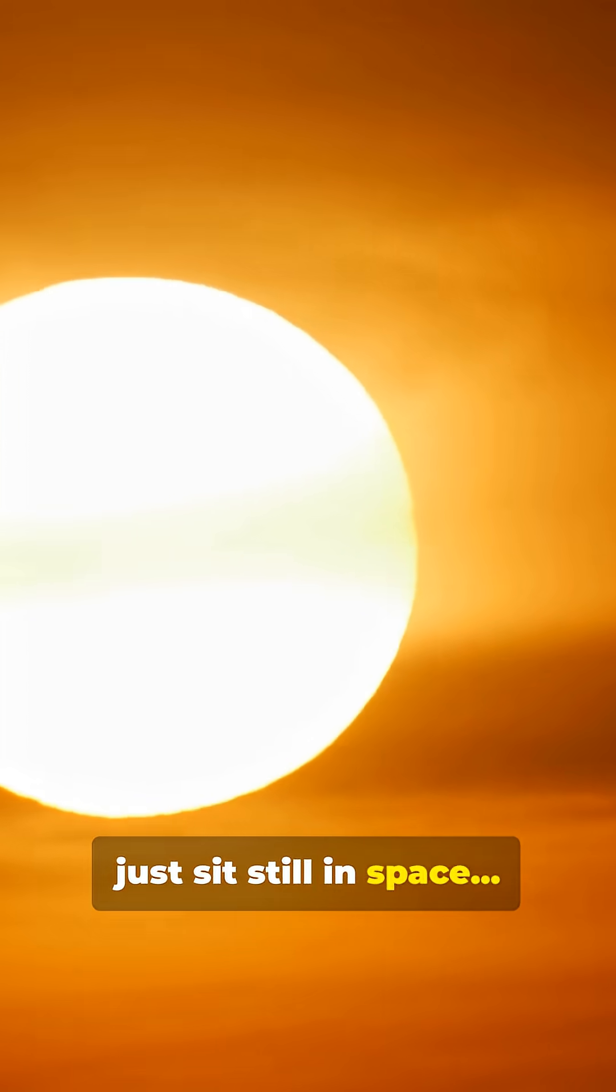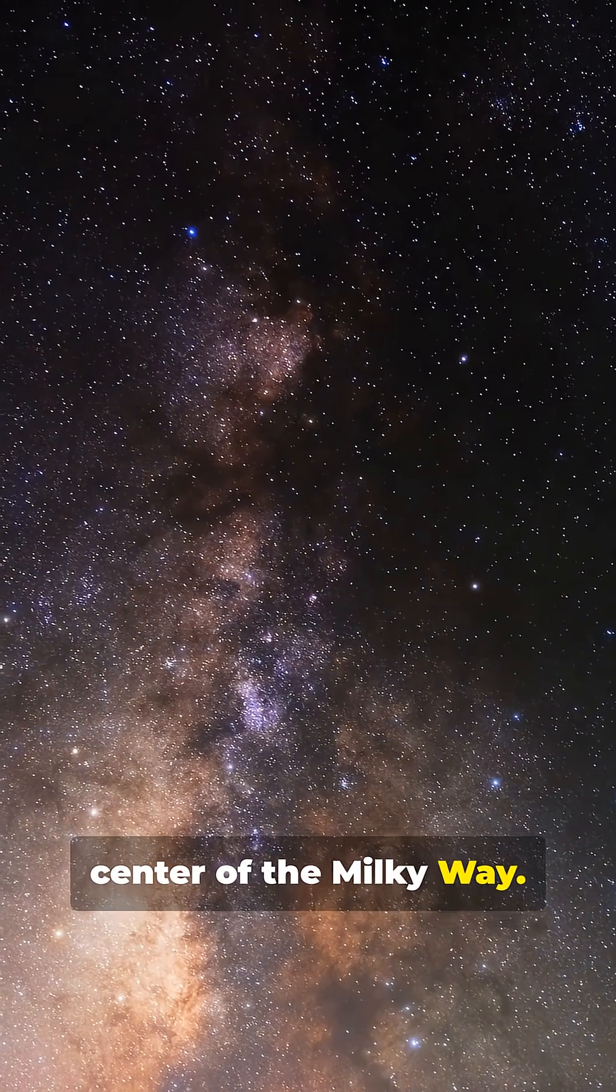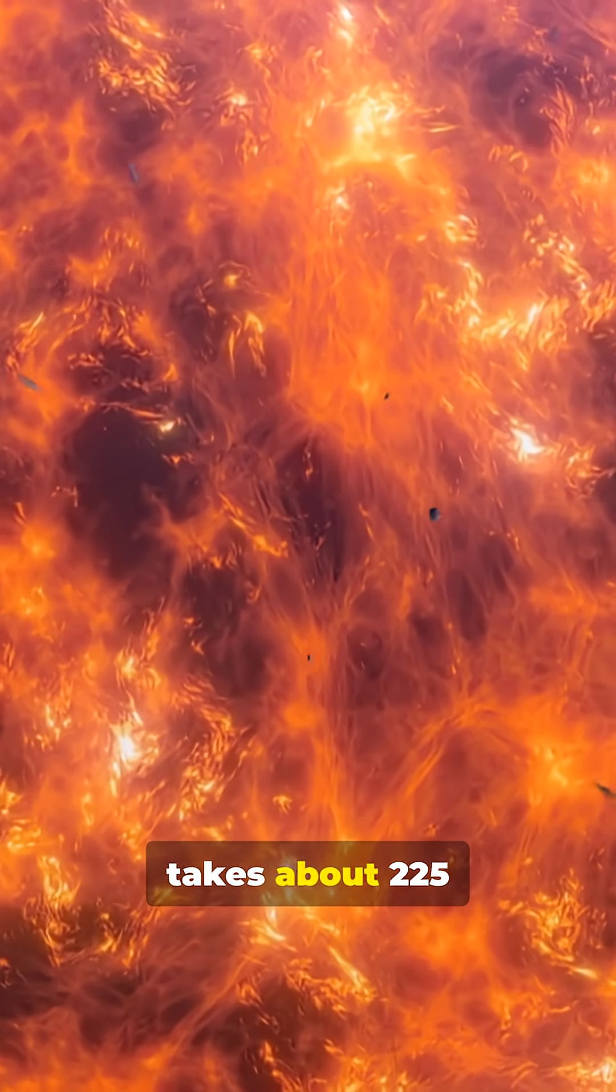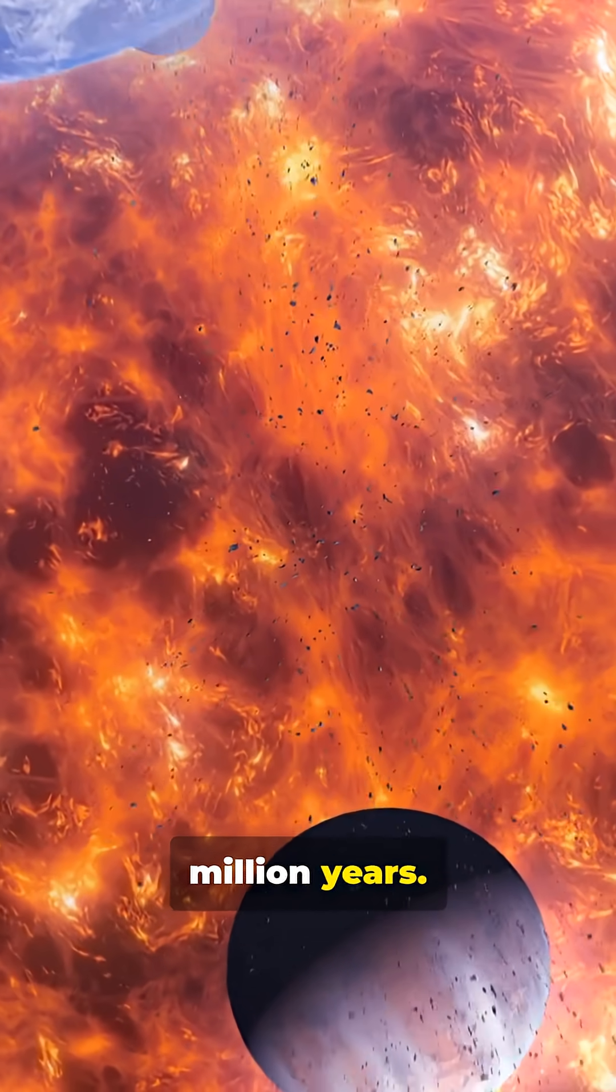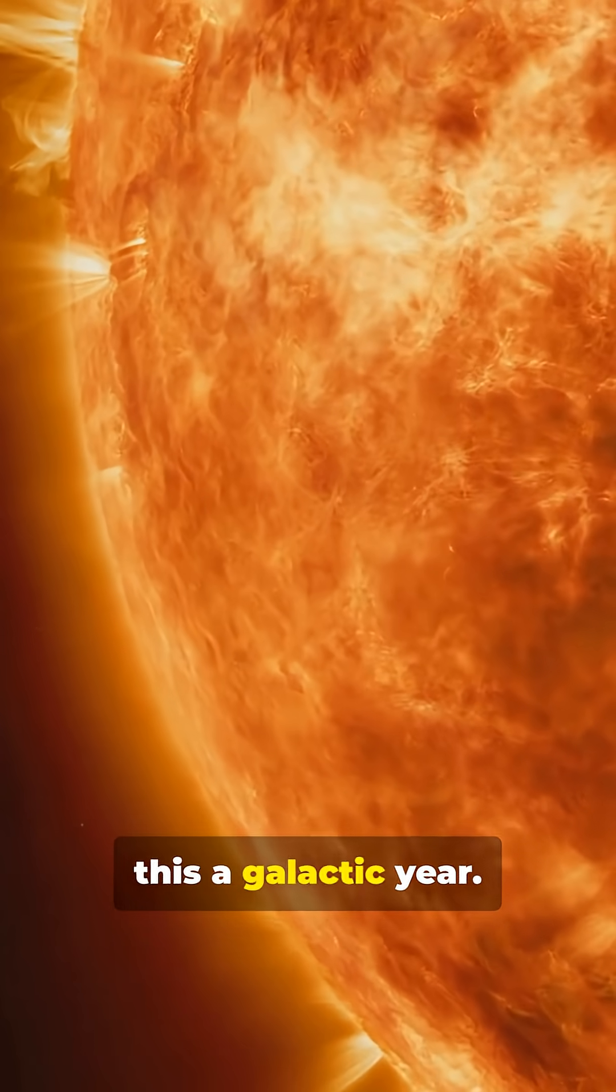The Sun doesn't just sit still in space, it's orbiting the center of the Milky Way. One full orbit takes about 225 million years. Astronomers call this a galactic year.